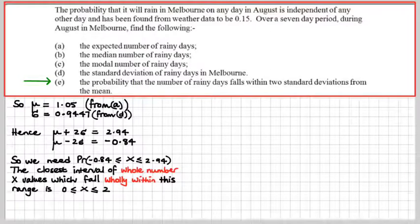We will find the maximum interval of whole number values of X, which are contextually okay, which fit within this theoretical interval. We need X to fall within that interval there. But X could only be 0, 1, 2, 3, 4, 5, 6, or 7. So we've got to find the maximum interval of X, the minimum value of X and the maximum value of X, so that the whole range is wholly contained within this interval.